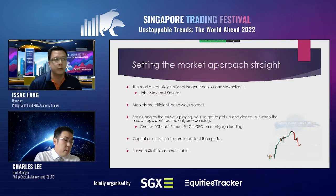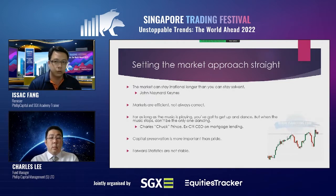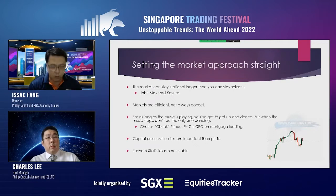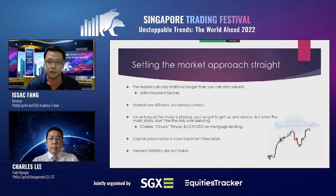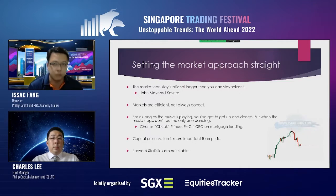Setting the market approach straight — a few statements I live by. The market can stay irrational longer than you can stay solvent. Overvalued can stay overvalued for a very long time, so if you short the market you're paying financing fees. Undervalued can also remain undervalued for an extended period, and in some cases you may not even have a chance to realize the gains because it gets privatized — people should remember Tiger Airways. Markets are efficient, not always correct. We aim to be profitable; there's no shame in making wrong calls, you just have to cut your positions.